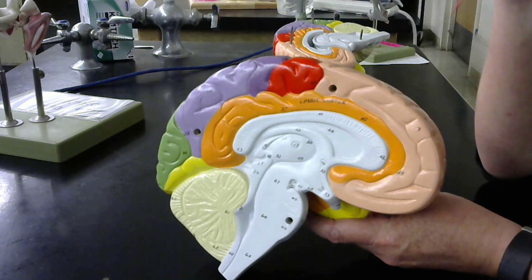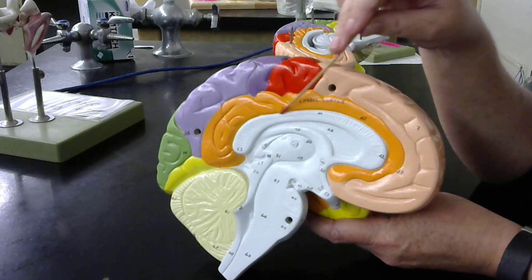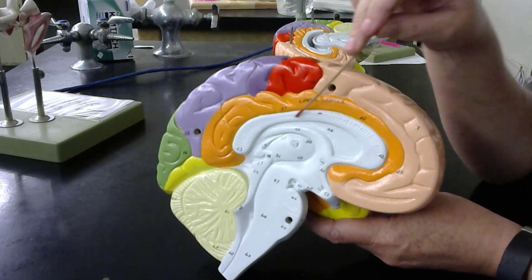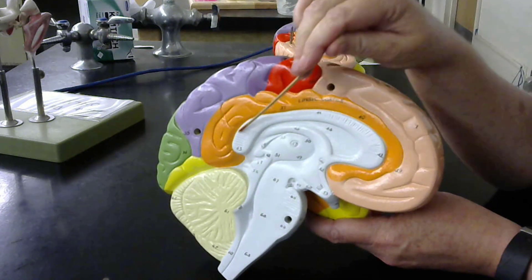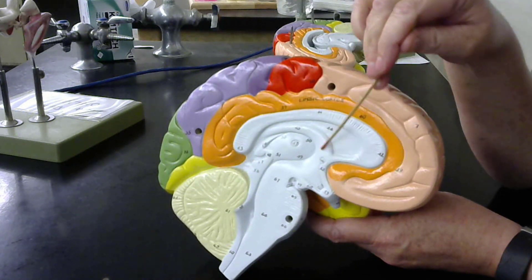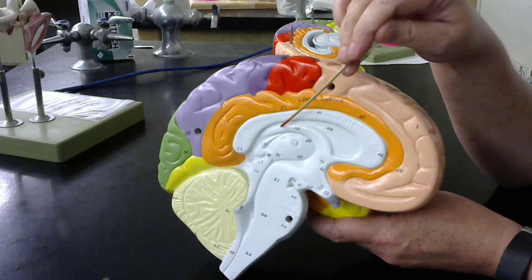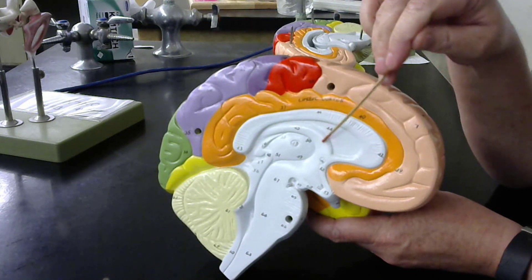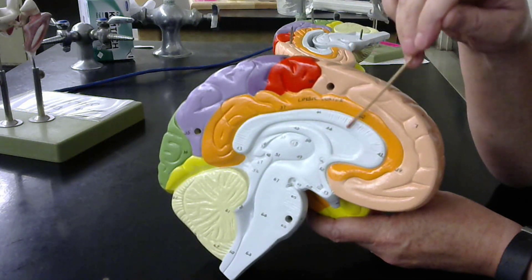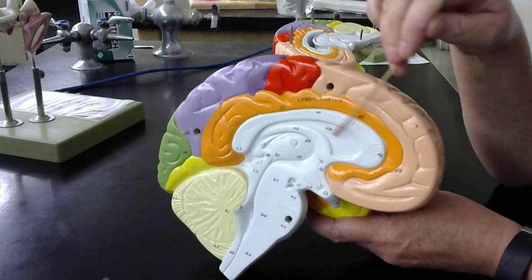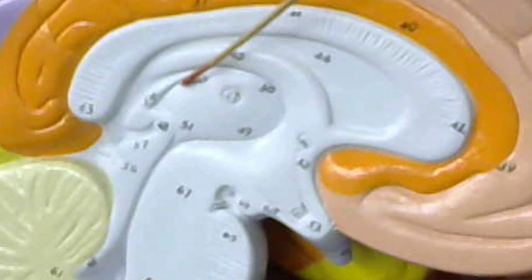The right and left hemispheres of the brain communicate through this structure, the corpus callosum. If we follow the corpus callosum around, we find ourselves at the fornix. The space between the fornix and the corpus callosum makes our lateral ventricle.